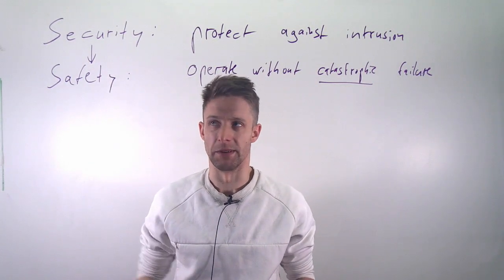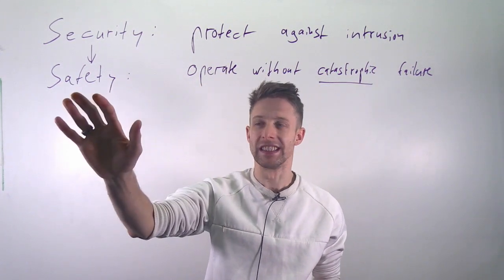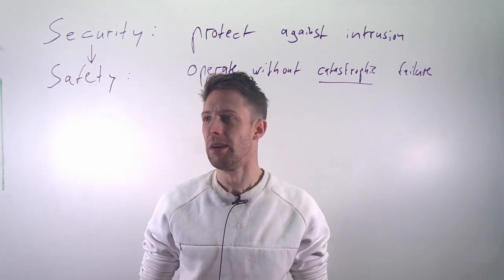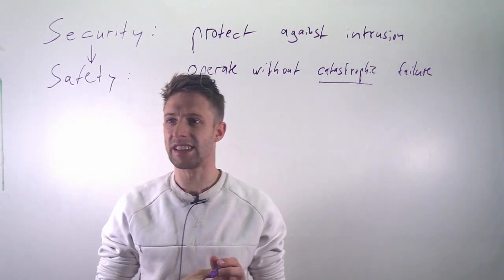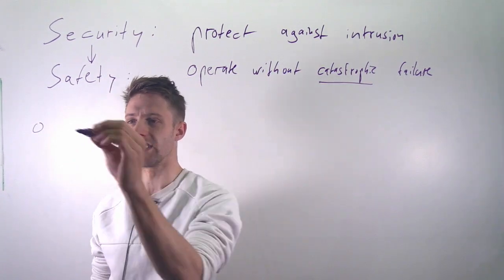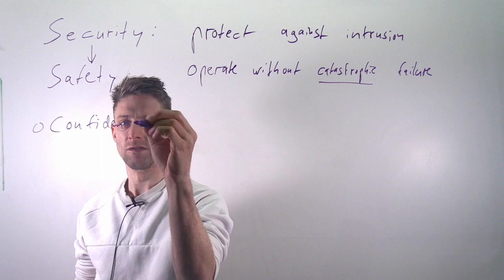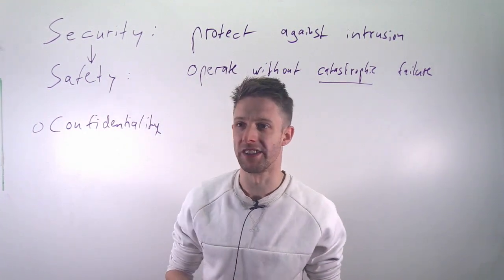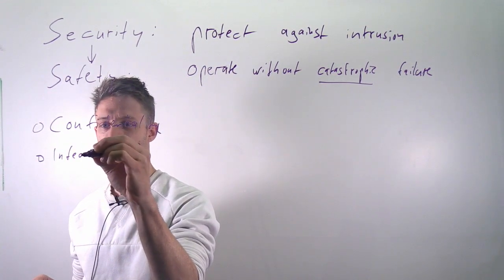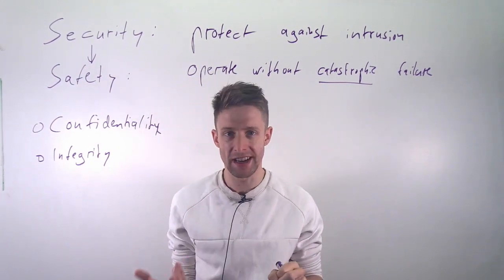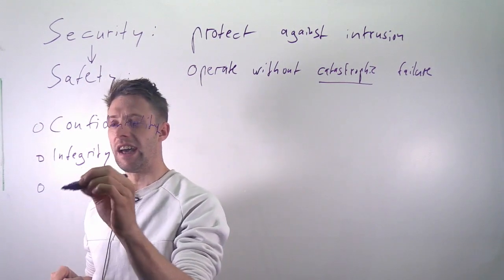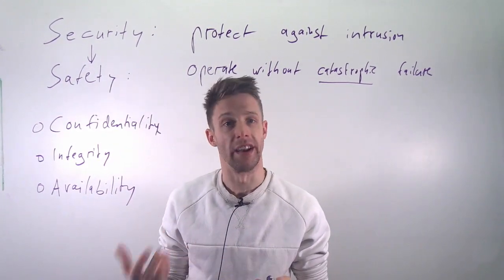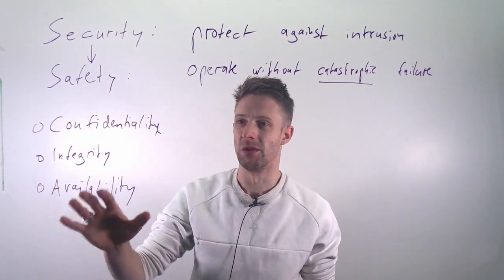The other way around does not apply — a system could definitely be unsafe, there could be a catastrophic failure, but it is very secure; you cannot intrude but things can seriously go wrong anyway. We'll focus on the security aspect, and three things we typically want to ensure are: confidentiality — access to data and assets is only possible by whoever should have access; integrity — the data is correct and can be relied upon, no one has modified anything; and availability — we can actually access the system, it doesn't crash.